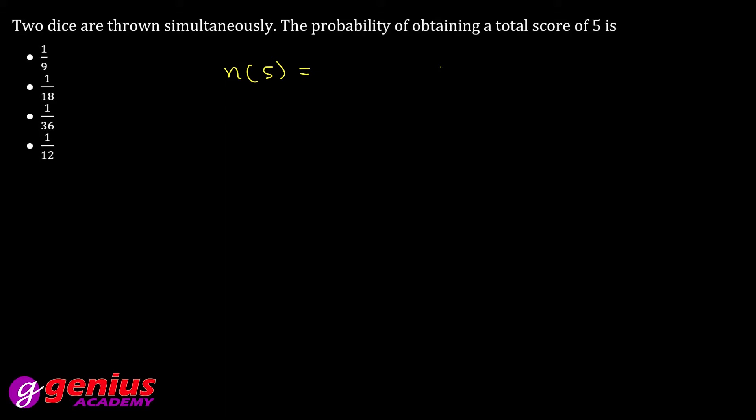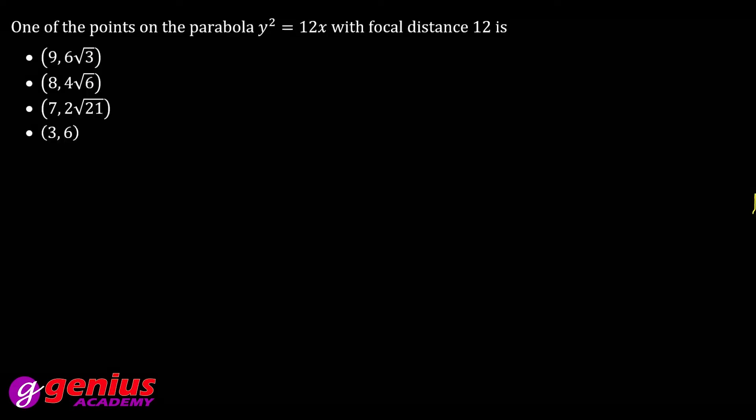Now what do you need to find? Favorable cases. So what are your favorable cases in which your total score will be 5? That will be 1,4 or 4,1, 2,3, 3,2. That means let E be the event, so number of favorable cases is 4. Then required probability is favorable cases over total number of cases, that means 4 by 36, which is 1 by 9.